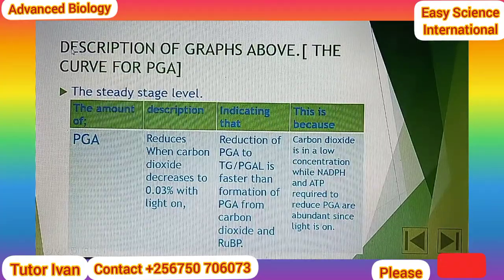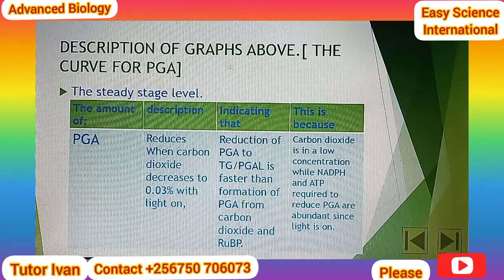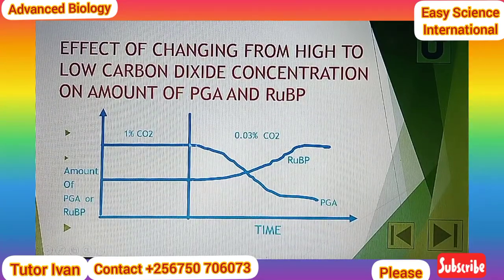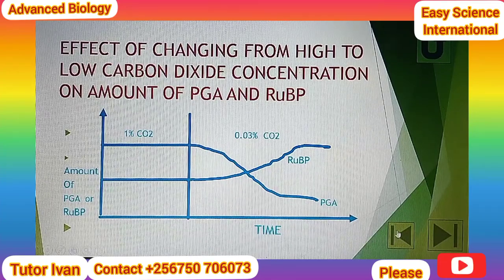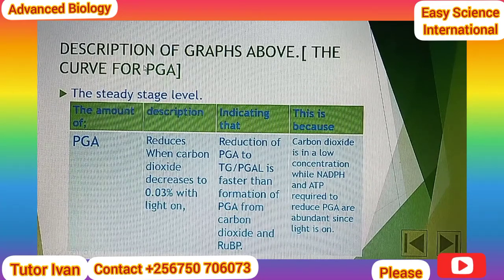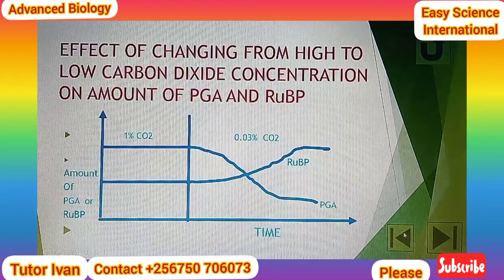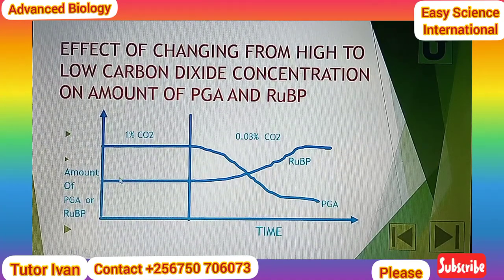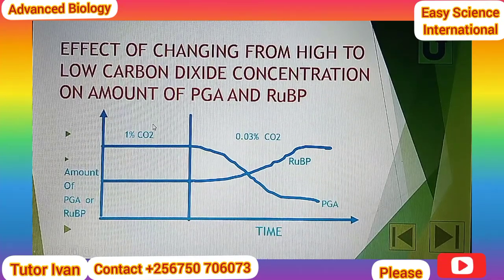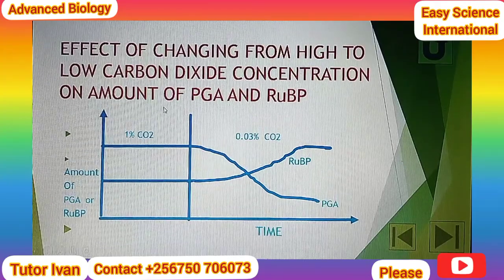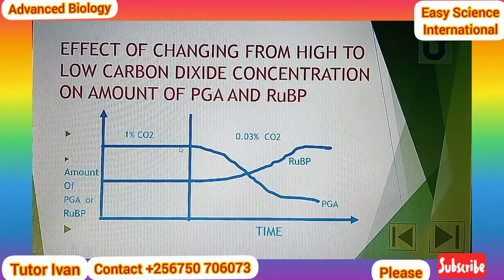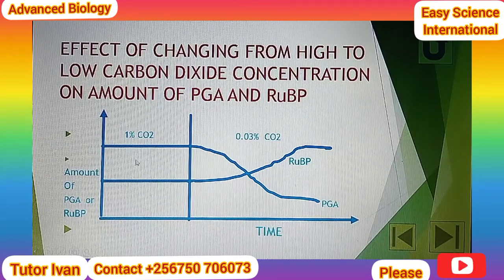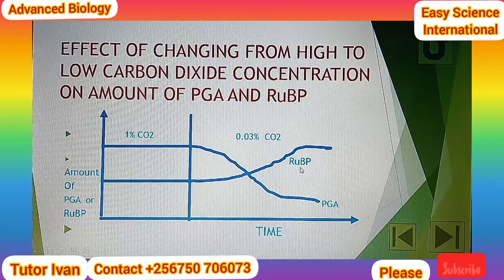Description of the graphs above — in particular looking at the curve for PGA. In general, the steady-state level is reached at 1% carbon dioxide concentration. The amount of RUBP increases and remains constant with increase in time at 1% carbon dioxide concentration, and that is when light is on. The same applies to the amount of PGA — it also increases and remains constant. Those two levels are what we call the steady-state levels for RUBP and PGA.